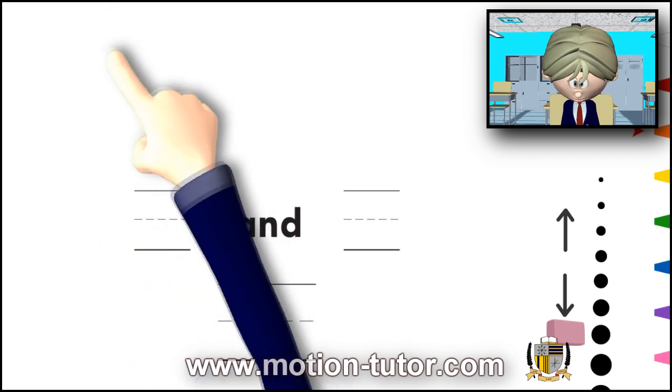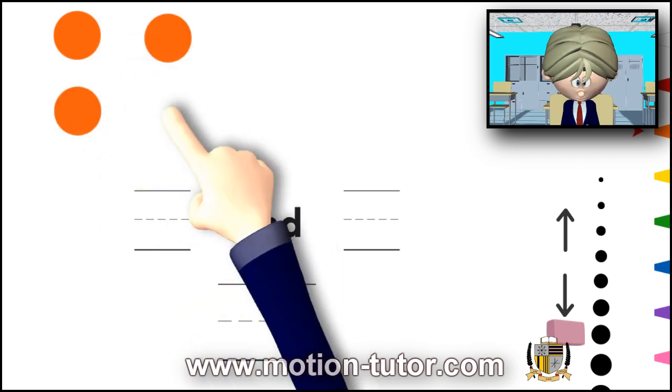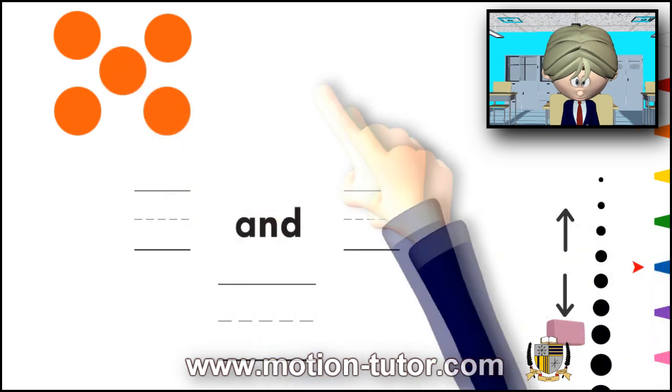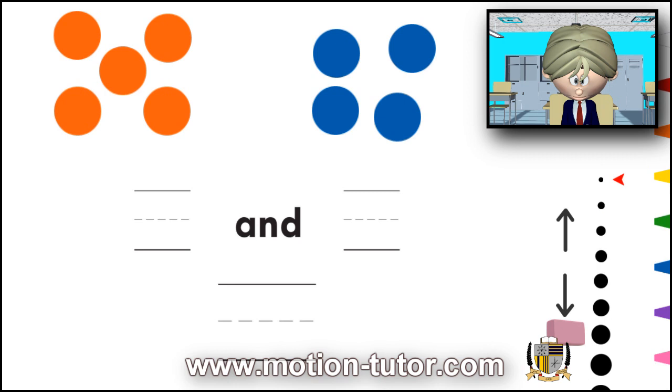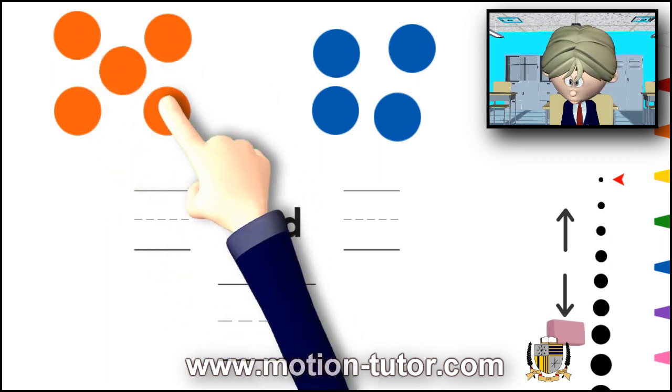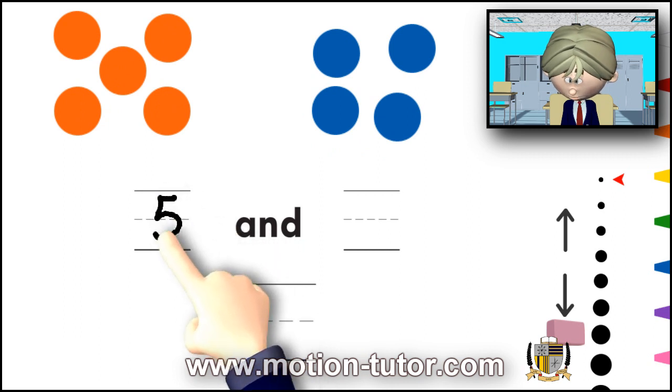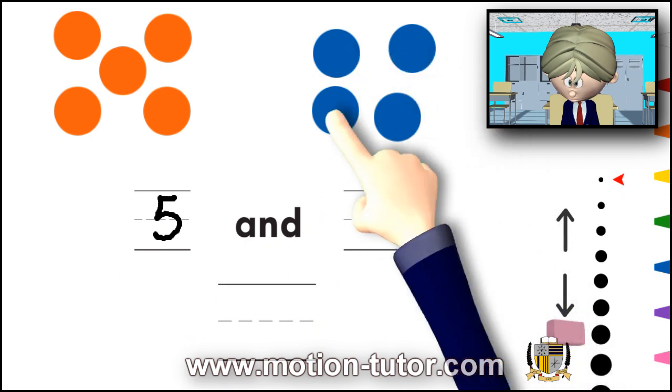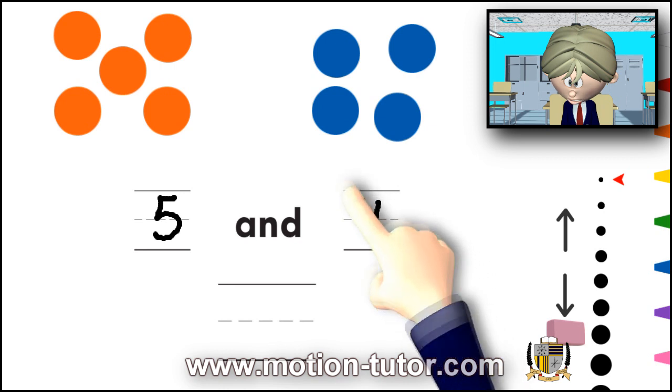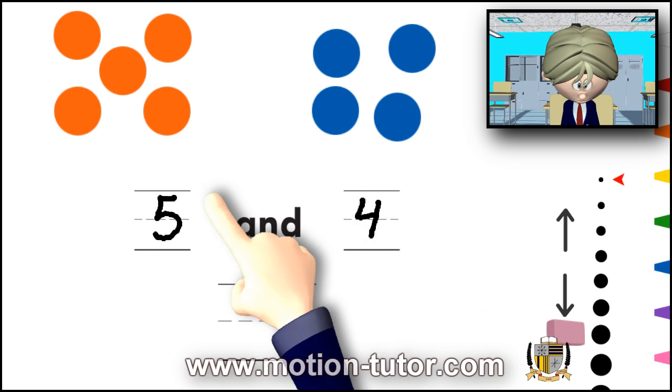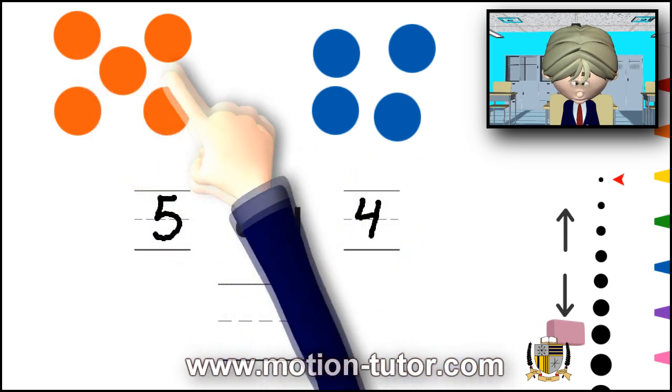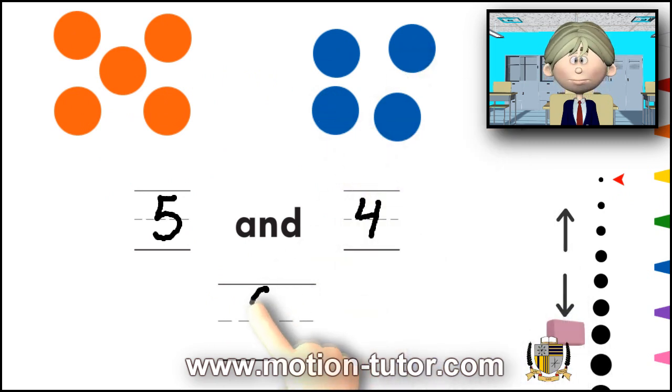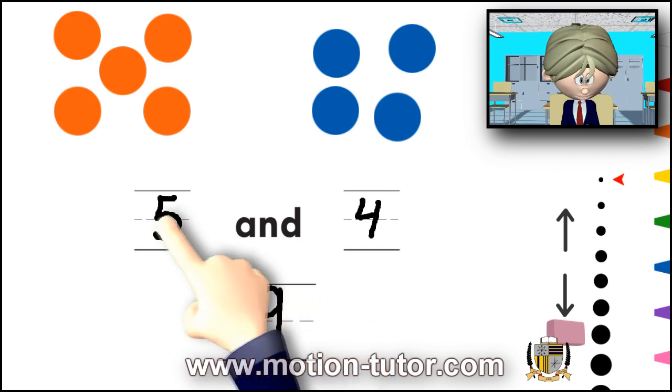Let's look at another example. So now looking at this, we have 1, 2, 3, 4, 5. We have 5 orange. And we have 1, 2, 3, 4 blues. Now how many counters do we have together? Remember, 5 and 4. And that will be 1, 2, 3, 4, 5, 6, 7, 8, 9. 5 and 4 is 9.